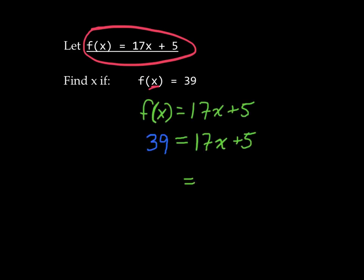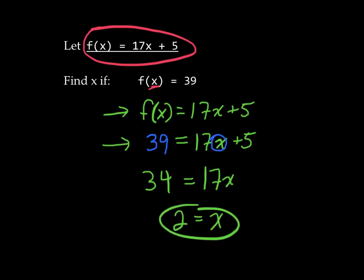Okay, welcome back. f of x is 17x plus 5, and we get 39 when we input some unknown mystery value of x into our function. Okay, so we can figure that out real fast. Subtract 5 from both sides gives us 34 equals 17x, and divided by 17, we get that x is 2.